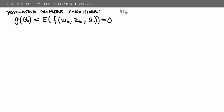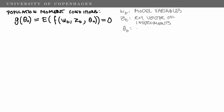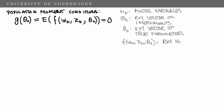Here, Wt is a vector of model variables. We have Zt, which is an r by 1 vector of instruments. We have theta zero, which is a k by 1 vector of true parameters. And finally, we have the function F of Wt, Zt, theta zero, which is an r by 1 vector of functions. Note that this function can be linear in the model variables and the instruments, or it can be a non-linear function.